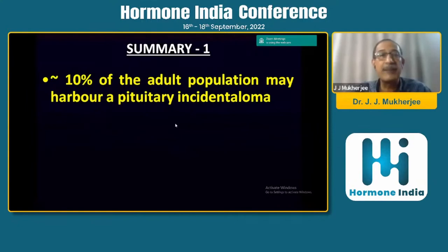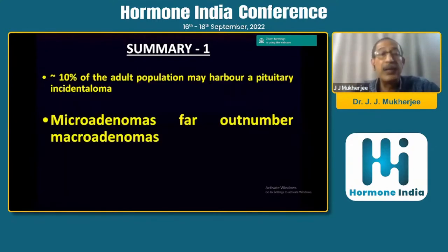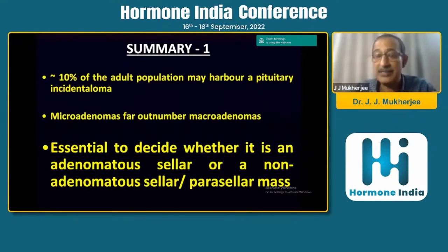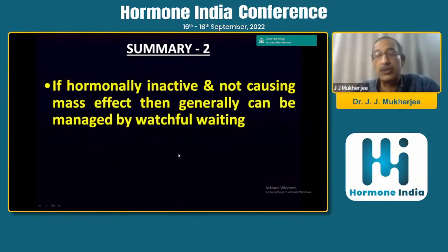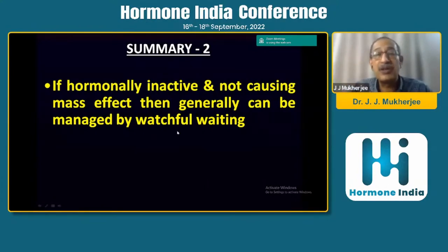Summary: 10% of the adult population may harbor a pituitary incidentaloma if you go looking carefully into the pituitary — many MRI brain studies with 8–10 mm cuts miss them. Microadenomas far, far outnumber macroadenomas. It is essential to decide whether it's an adenomatous sellar mass or a non-adenomatous sellar or parasellar mass, as the latter definitely needs specific treatment. If it's adenomatous, answer two questions: is it hormonally active, and is it causing compressive symptoms? If hormonally active, surgery — except for prolactinoma, which should never be sent to a surgeon unless specifically indicated. If not causing mass effect, manage by watchful waiting. Prolactin-secreting tumors should be treated with dopamine agonist therapy.